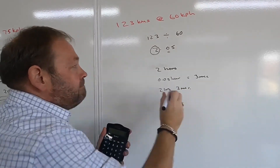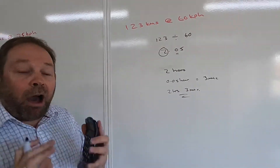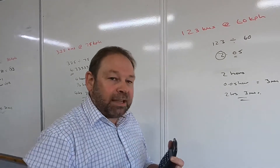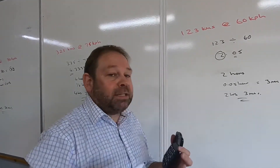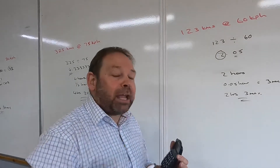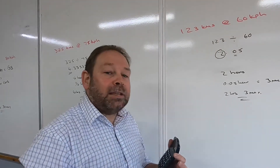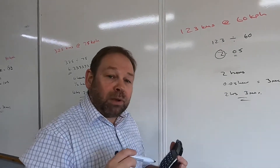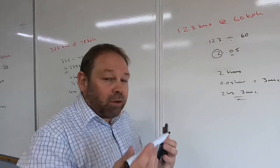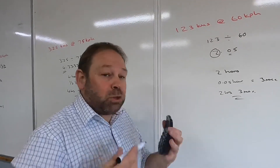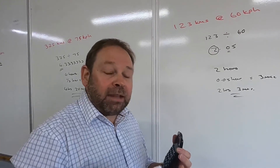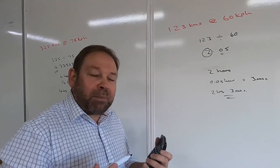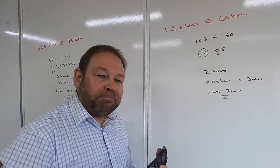0.05 multiplied by 60 gives us 3, which is 3 minutes. So our answer is 2 hours and 3 minutes. Hopefully those examples help explain how to calculate the time taken from the information given. As I said earlier, absolutely vital that you nail that process — it is crucial. Have a look in the course; there is a help sheet that will give you a reminder on how to do this. You can take that into your exam. Hope that helps — more videos coming up soon.